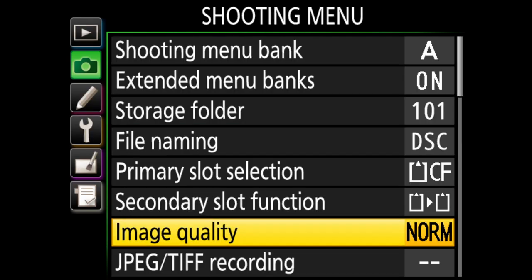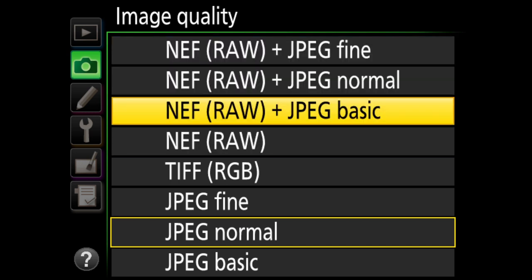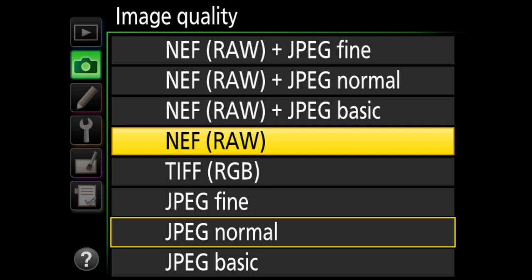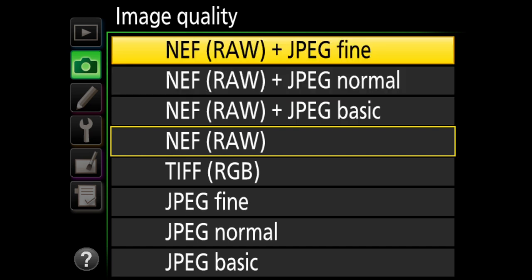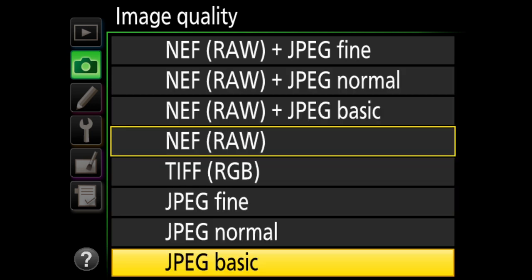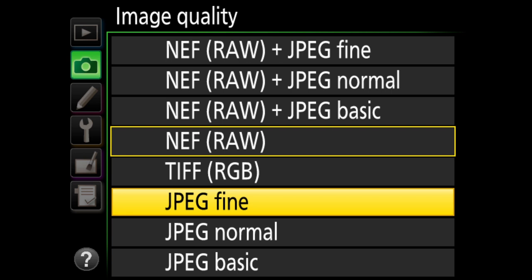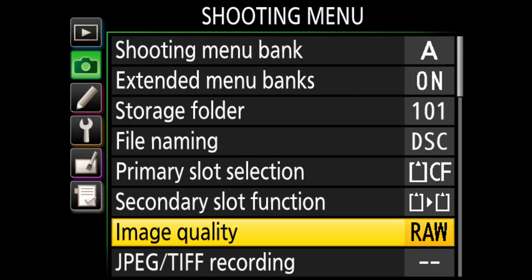Image quality is very important — probably the first setting I change on any new camera. This is where you set your image format: raw plus JPEG, raw only, or JPEG. If you've been shooting JPEG, you need to start shooting raw. If you're not comfortable editing raw yet, at least shoot raw plus JPEG fine. Avoid normal or basic JPEG as they reduce resolution. I select NEF raw to shoot at the highest quality and resolution possible.